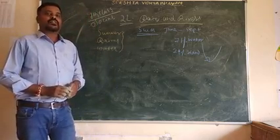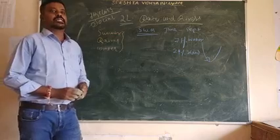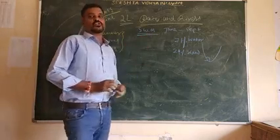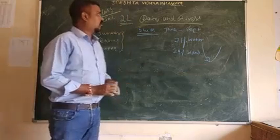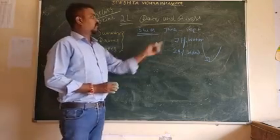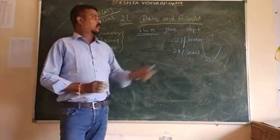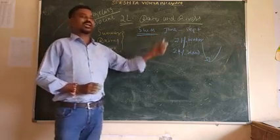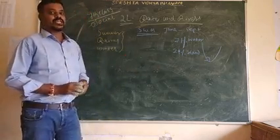In the months of June, July, August, and September there is heavy rainfall due to the southwest monsoon. The southwest monsoon first bursts in the Kerala coast and spreads throughout the country from June to September. In this way rainfall occurs in our country, India.